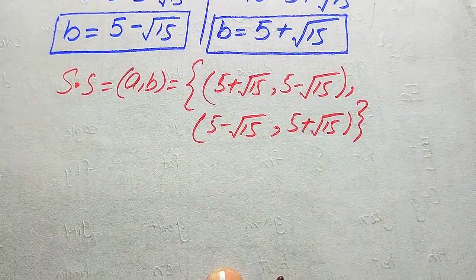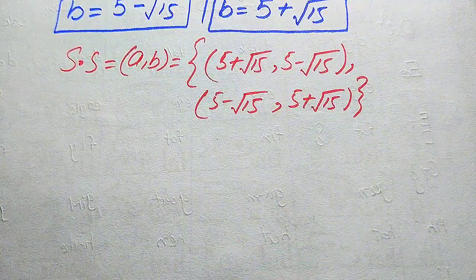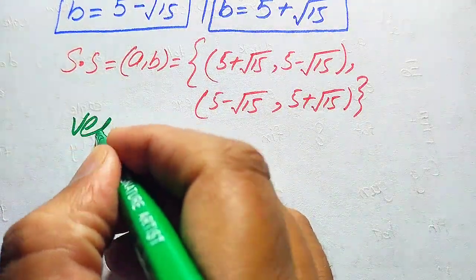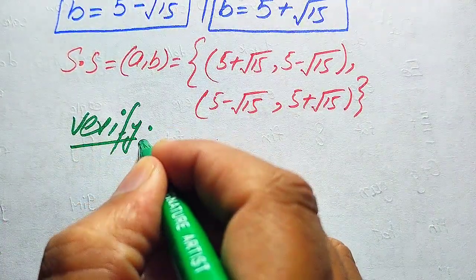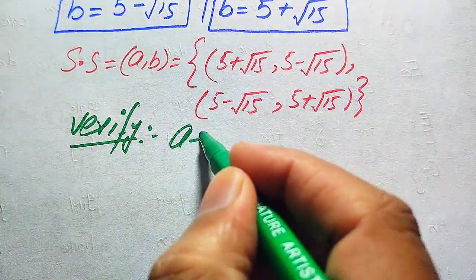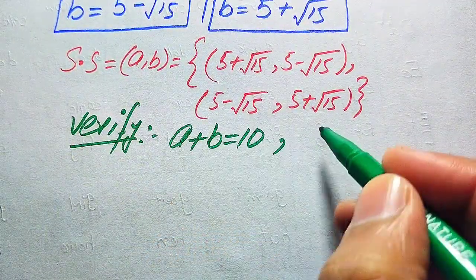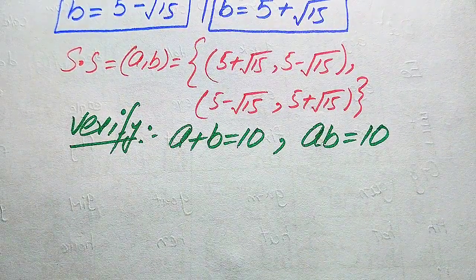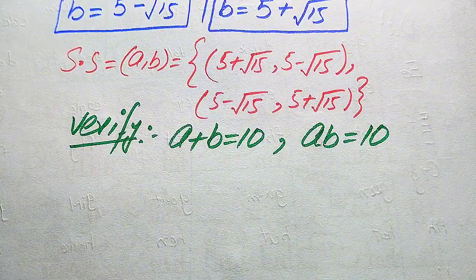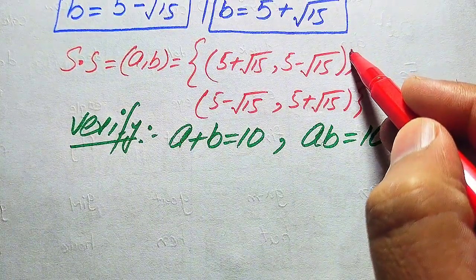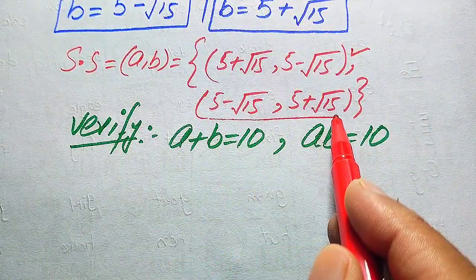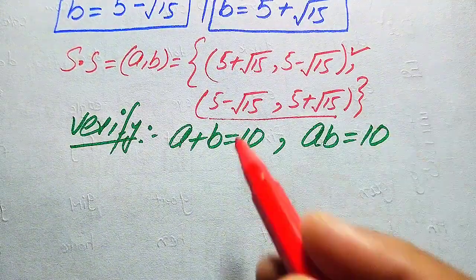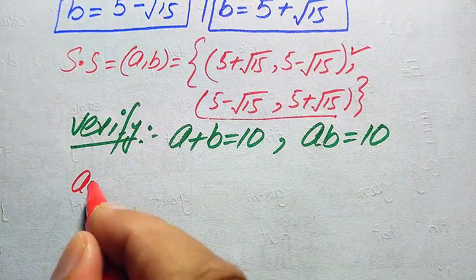Now we need to verify that these two solutions satisfy our given equations. The given equations are: a plus b equals 10 and ab equals 10. We will verify the first solution and leave the second solution for you to verify yourself. For the first solution, a equals 5 plus square root of 15 and b equals 5 minus square root of 15.